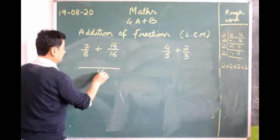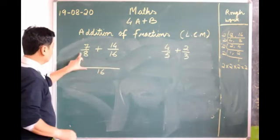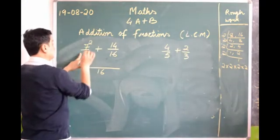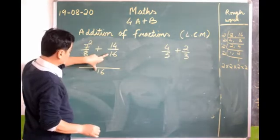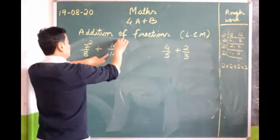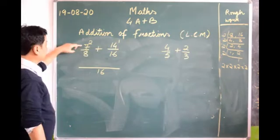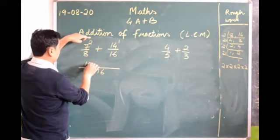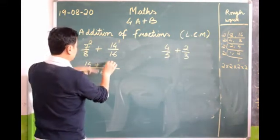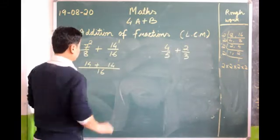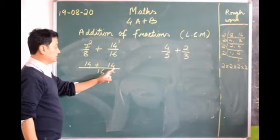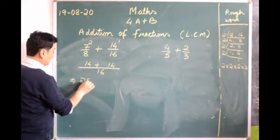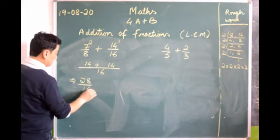Draw a line and write 16 in the middle. 8 goes into 16 two times — 8 twos are 16. 16 goes into 16 one time — 16 ones are 16. Now let's add these two: 7 times 2 is 14, plus 14 times 1 is 14. You add these two: 14 plus 14 is 28, so we get 28/16.